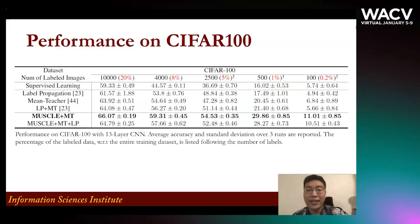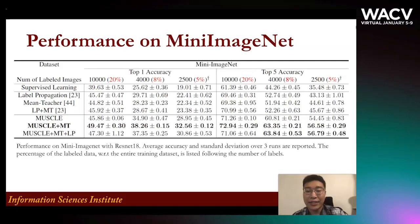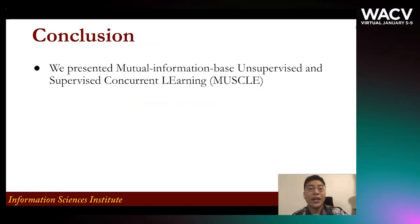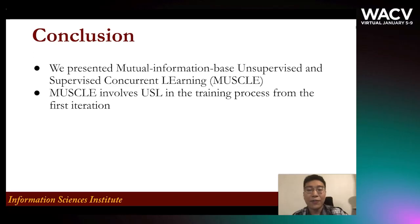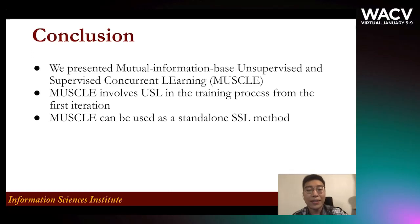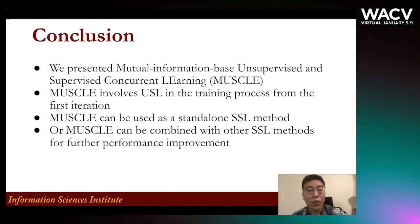Here are the results on CIFAR-100 and Mini-ImageNet. In conclusion, we present MUSL — Mutual Information-Based Unsupervised and Supervised Concurrent Learning. MUSL involves USL in the training process from the very first iteration. MUSL can be used as a stand-alone SSL method, or it can be combined with other SSL methods for further performance improvement. If you are interested in our work or want to know more details, please check out our paper, and if you have any questions, please come to our Q&A sessions. Thank you.